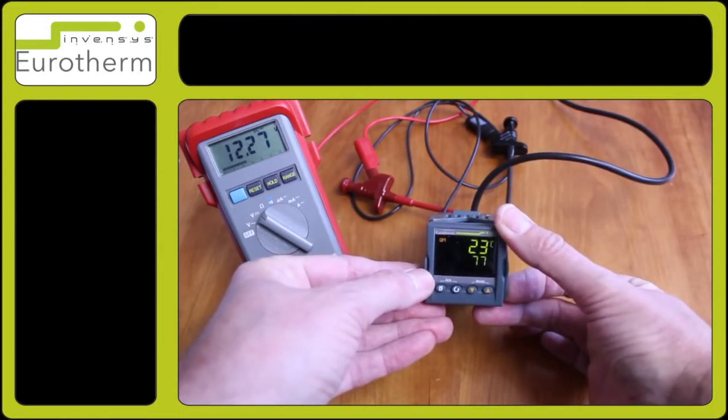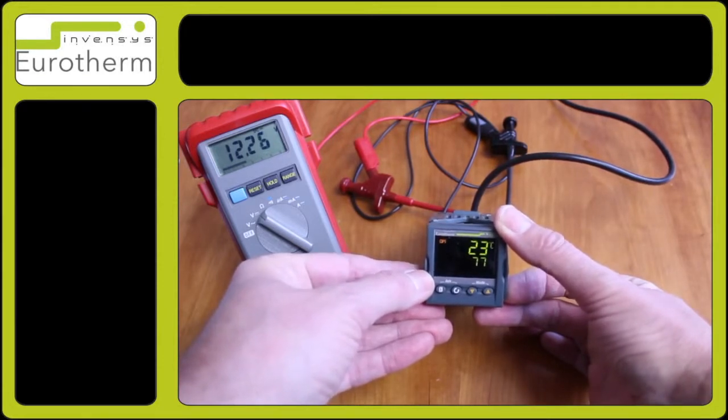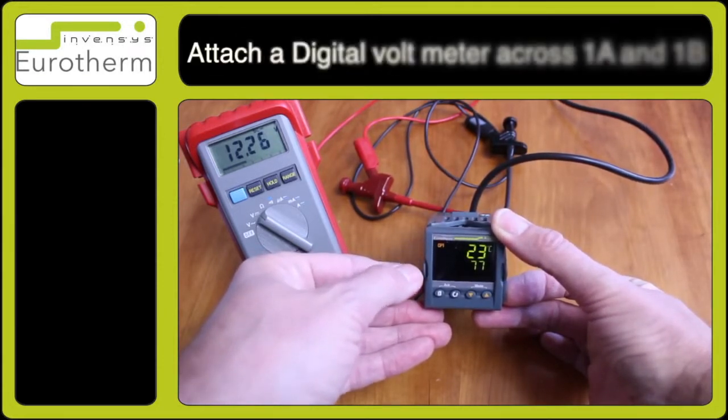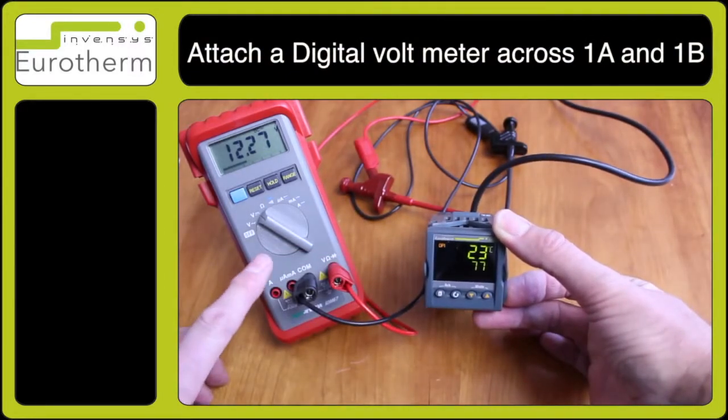In this particular case we have a logic output on 1A and 1B. When you've done that connect your DMM or digital voltmeter like I have here across 1A and 1B.